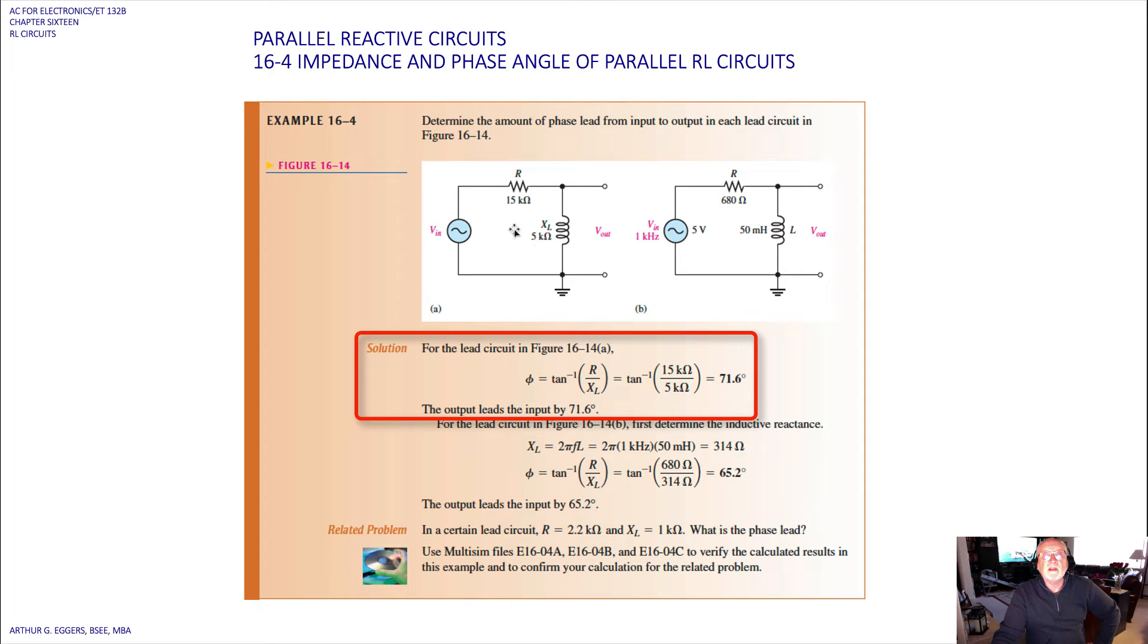So we can find, then, the angle, we're going to call it angle phi this time. Angle phi, then, is the inverse tangent of R over L, basically 5 divided into 15, the k and the ohms cancel out, and we're left with 71.6 degrees. So the output leads the input by 71.6 degrees.